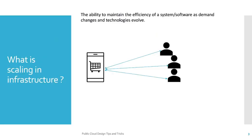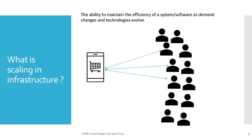So what is scaling capability? It is the ability to maintain the efficiency of a system or software as demand changes and technology evolves. You can think about an ecommerce portal: when there is a low number of requests the ecommerce portal is stable, but when there is an increase in requests, the ecommerce portal also needs to scale in or scale out properly so that it can cater to the number of customer requests efficiently.